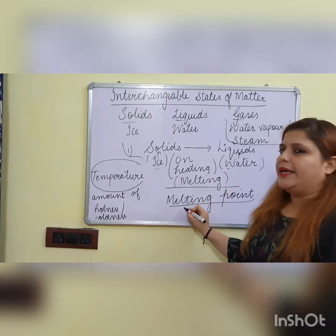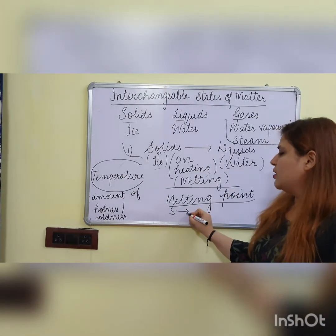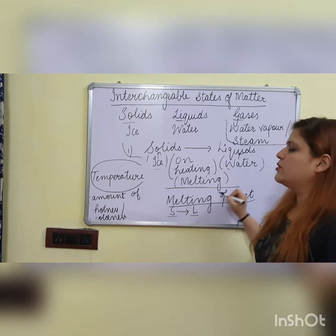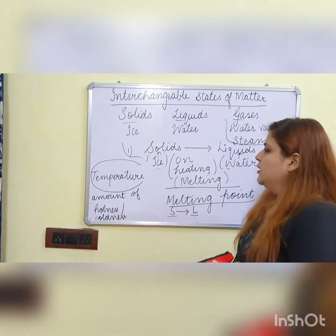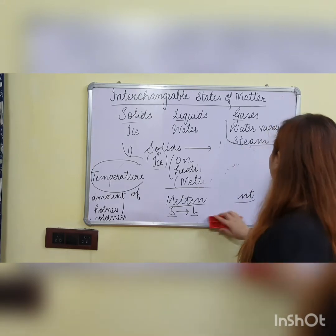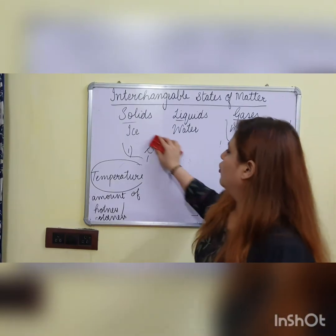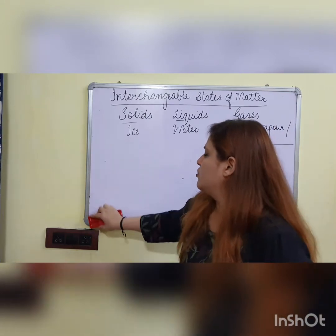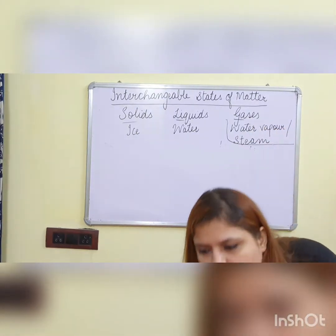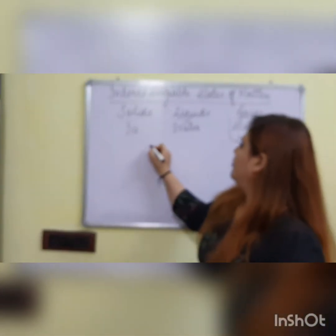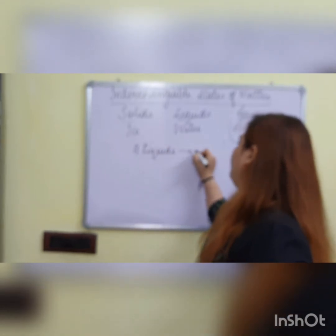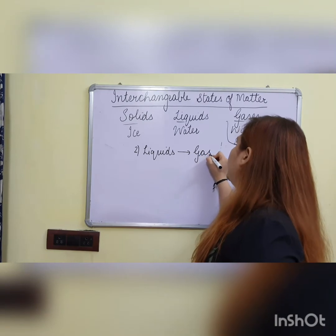Melting happens to solids, and solids melt to change into liquids. So the temperature at which solid changes into liquid is called melting point. We will talk about melting point again at the end. Now we will do the second change of form: changing of liquids into gases.